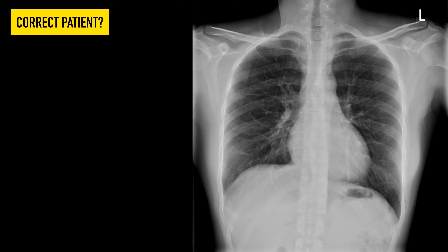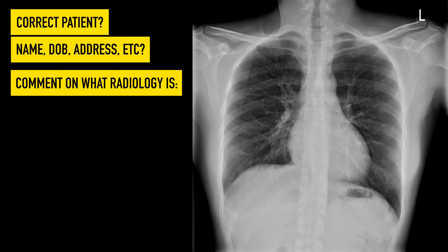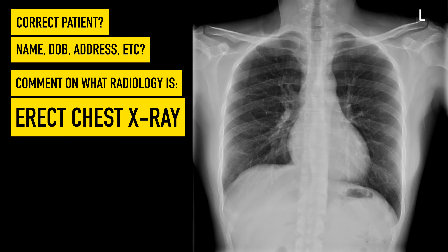So Adam, we've got a chest X-ray up here. Walk me through how we're going to assess this and how we can talk about what we can see to a senior. The first and perhaps most important thing is confirming it's the correct patient X-ray. Is it the right name? Is it the right date of birth? Is it the right hospital number? You get patients with the same name and date of birth, but they really shouldn't have the same identifying numbers in your admin. Once we're certain we're looking at the right X-ray, have we got the right body part?